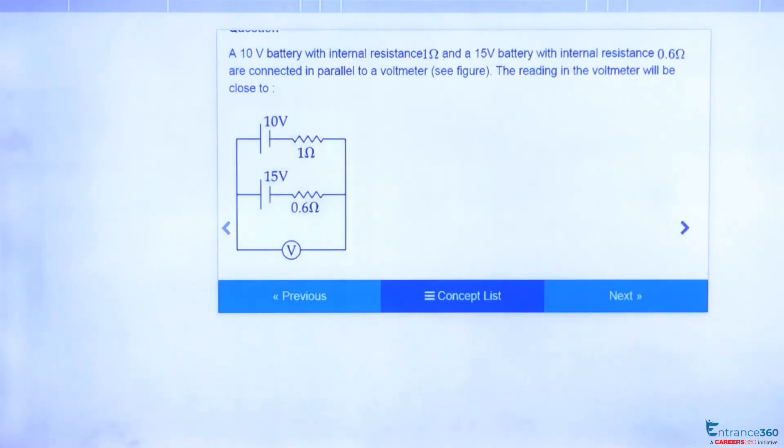Hello students, we have a question from JEE Main from the chapter current electricity. The question states that we have two battery cells of 10V and 15V with internal resistances of 1Ω and 0.6Ω respectively. We have to find the reading of the voltmeter.